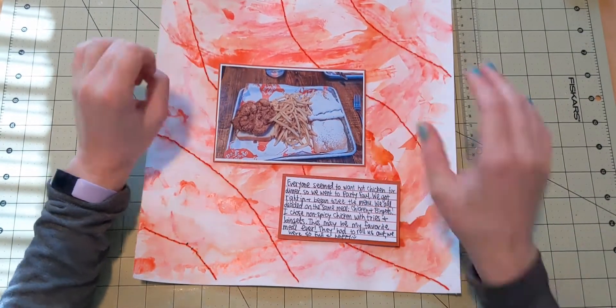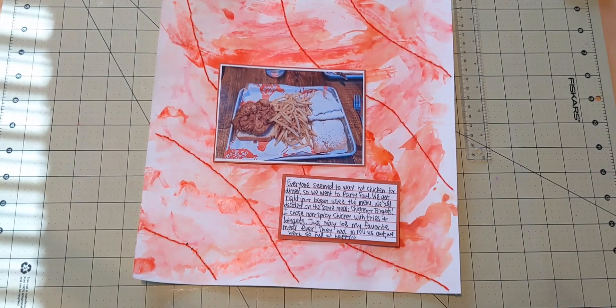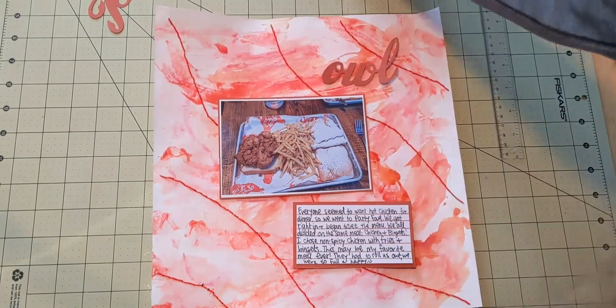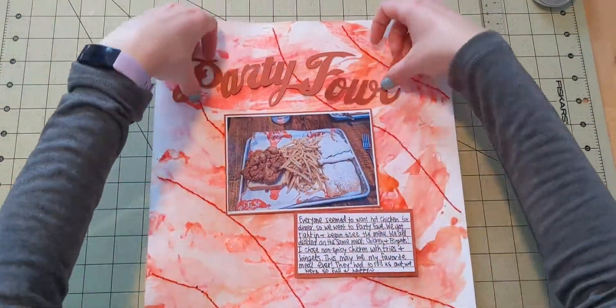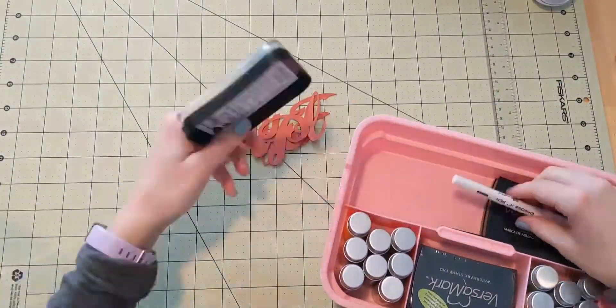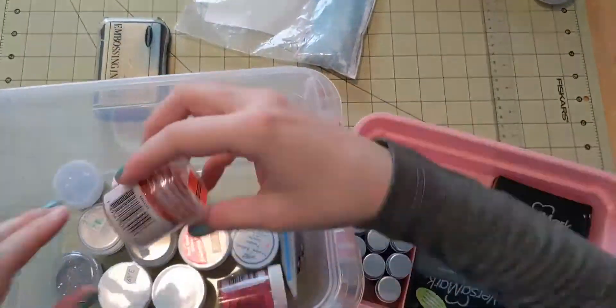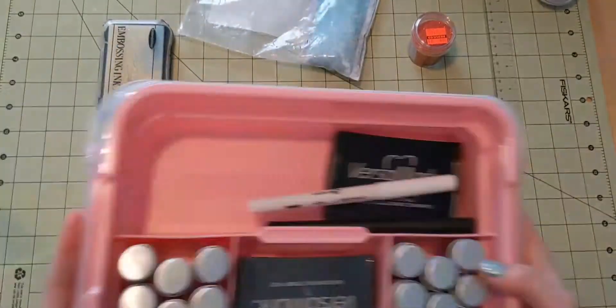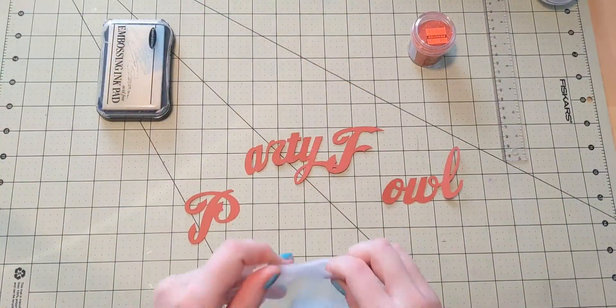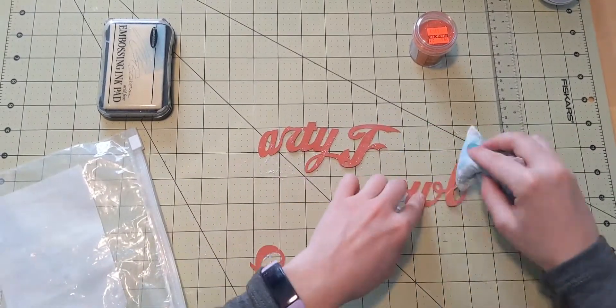So now I'm thinking I want my layout to kind of be diagonal, have a diagonal line. But when my title is so big, and I did go online and I found the exact font and everything of the restaurant, so I cut that out on my Cricut, and it's so large that it really works best to go in the center.